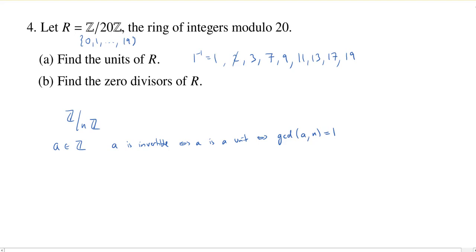So our units in Z mod 20Z are going to be 1, 3, 7, 9, 11, 13, 17, and 19. All right, now let's say a little bit about why this is true.